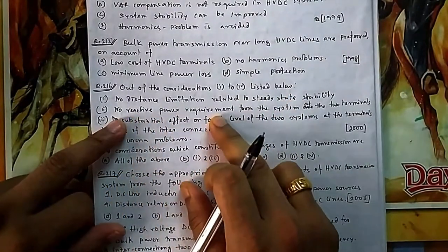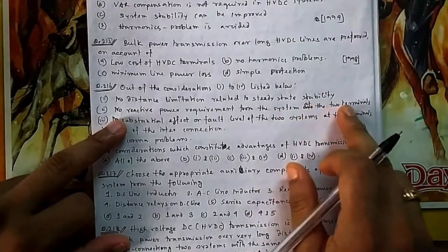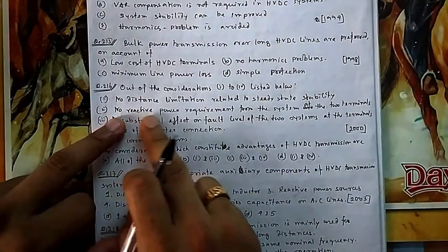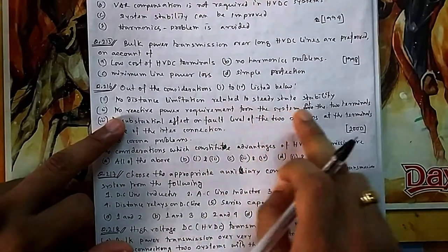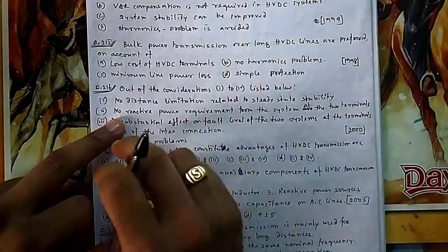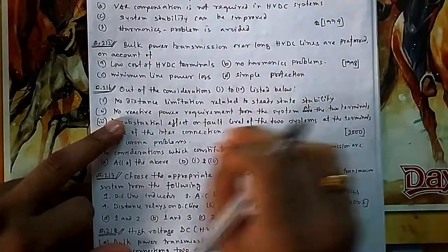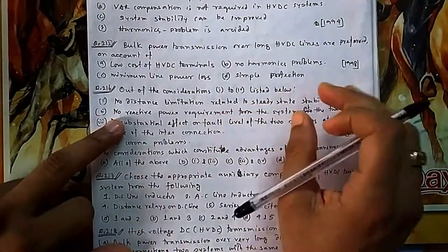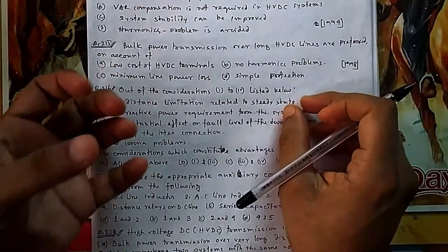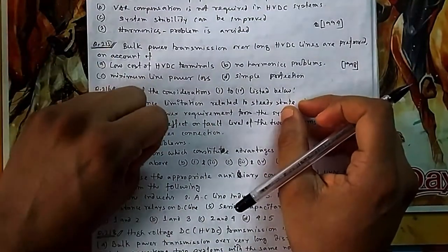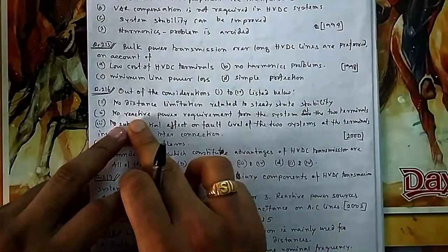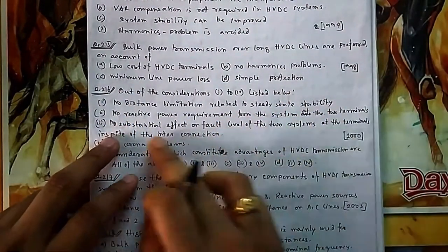Consideration 2: no reactive power requirement from the system at the two terminals. This is not correct because there is a reactive power requirement at both terminals. In a DC link, reactive power Q cannot flow — only P can be transmitted. On the rectifier side, Q must be absorbed, and on the inverter side, Q must be supplied to the load. So this is wrong.